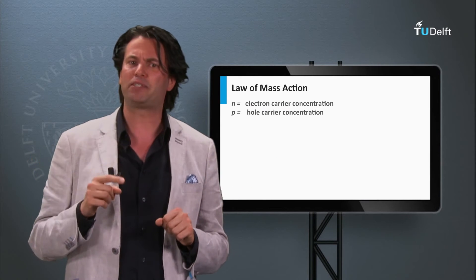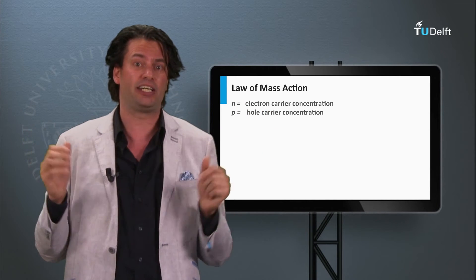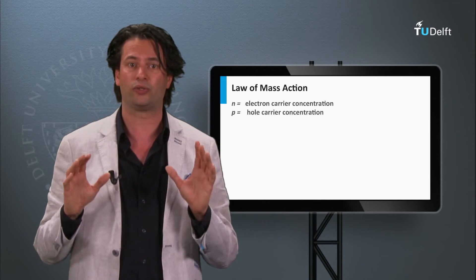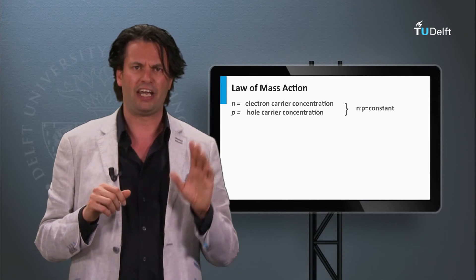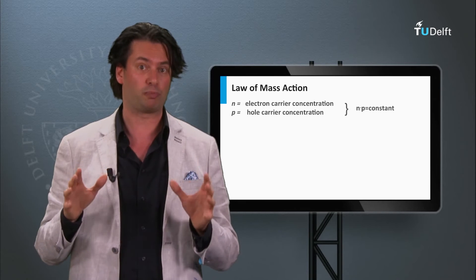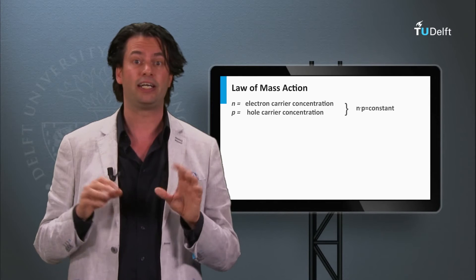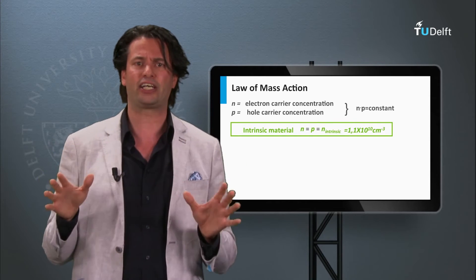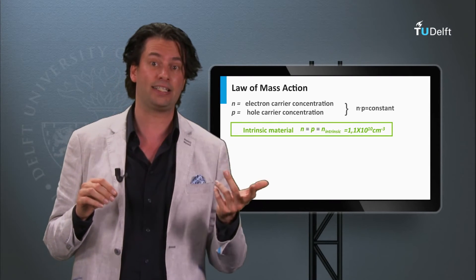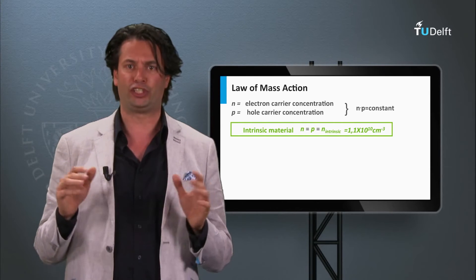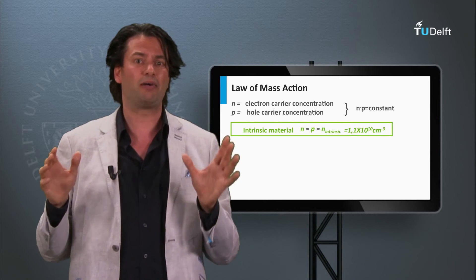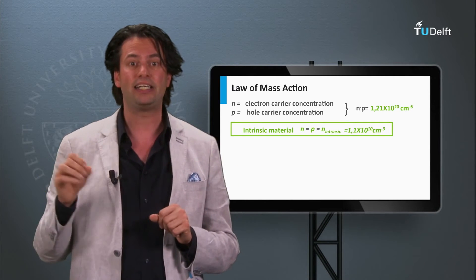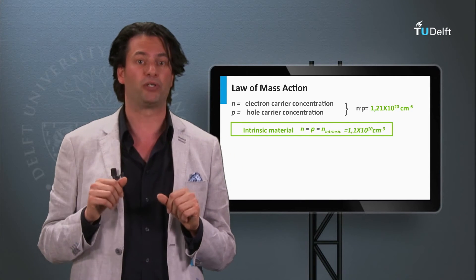The density of charge carriers can be described by the law of mass action. This law tells us that at a given temperature the product of the electron density and the hole density is constant, independent of the doping concentration. If n corresponds to the electron density and p corresponds to the hole density, this law tells us that the product n times p is constant if we would manipulate either n or p. For intrinsic silicon, which is silicon without any impurities, at room temperature the electron density n and the hole density p are equal. For silicon, the electron and hole density is in the order of 1.1 times 10 to the 10th per cubic centimetre. This means the product n times p is equal to 1.21 times 10 to the 20th per cubic centimetre squared.